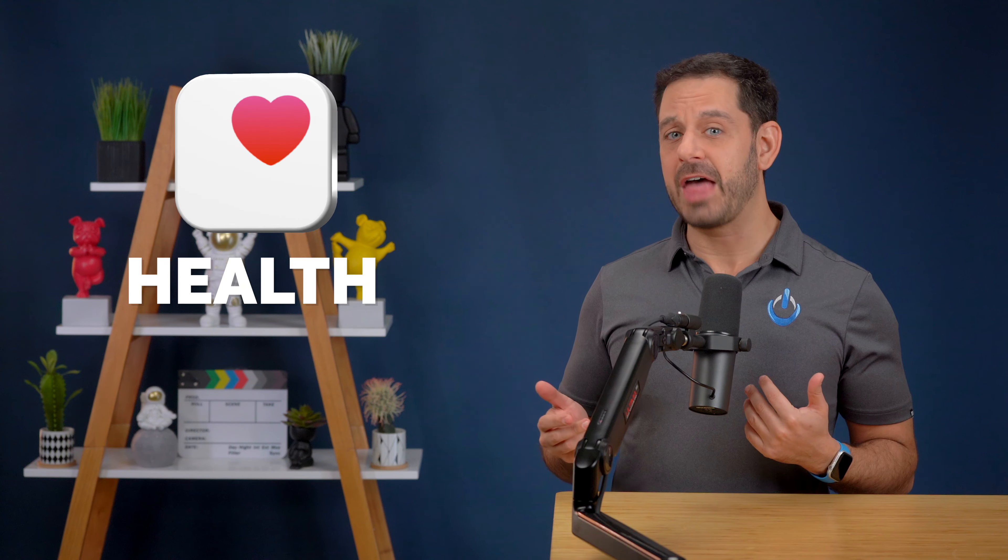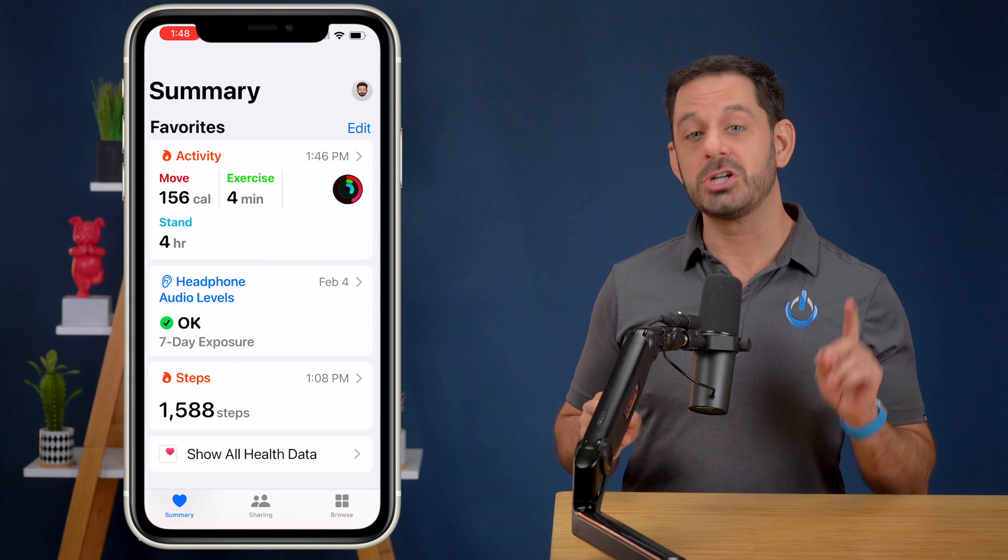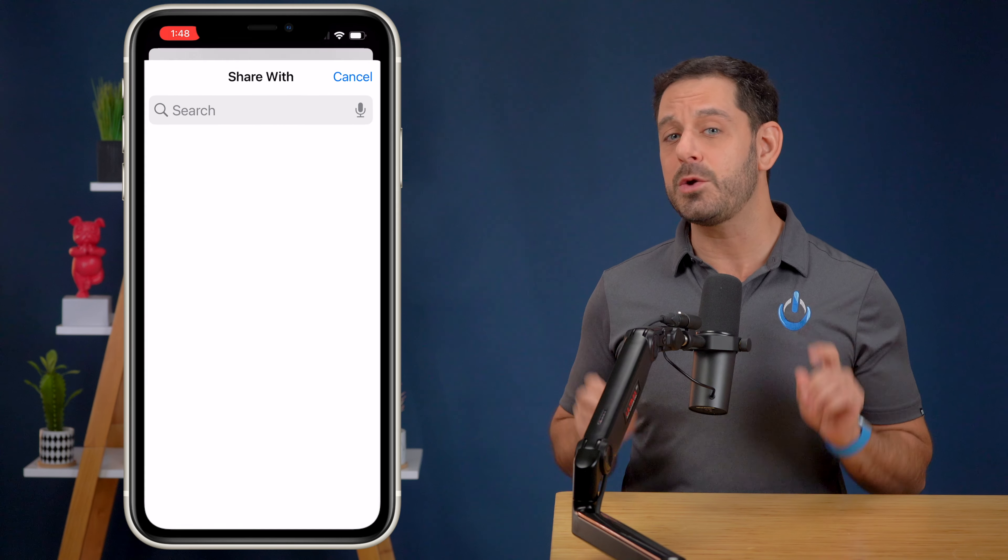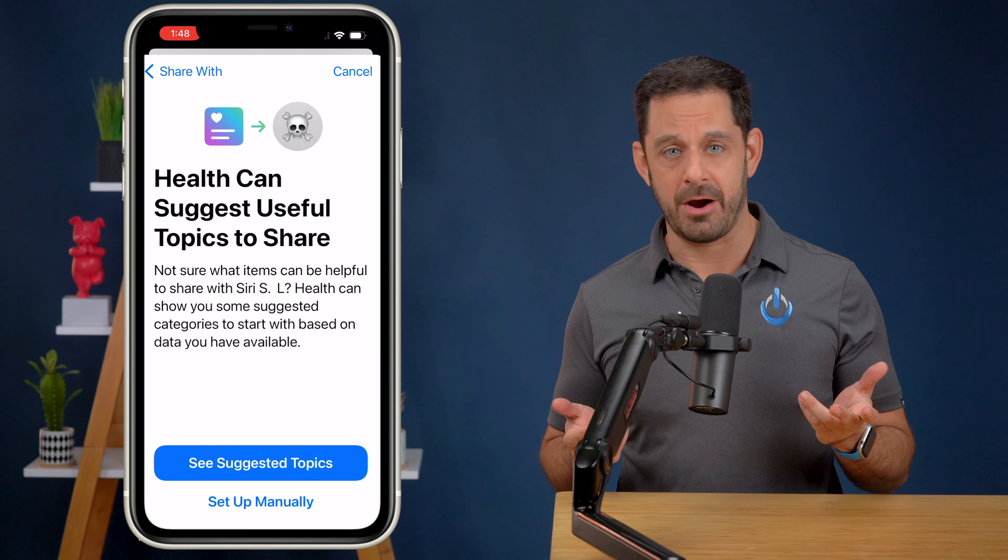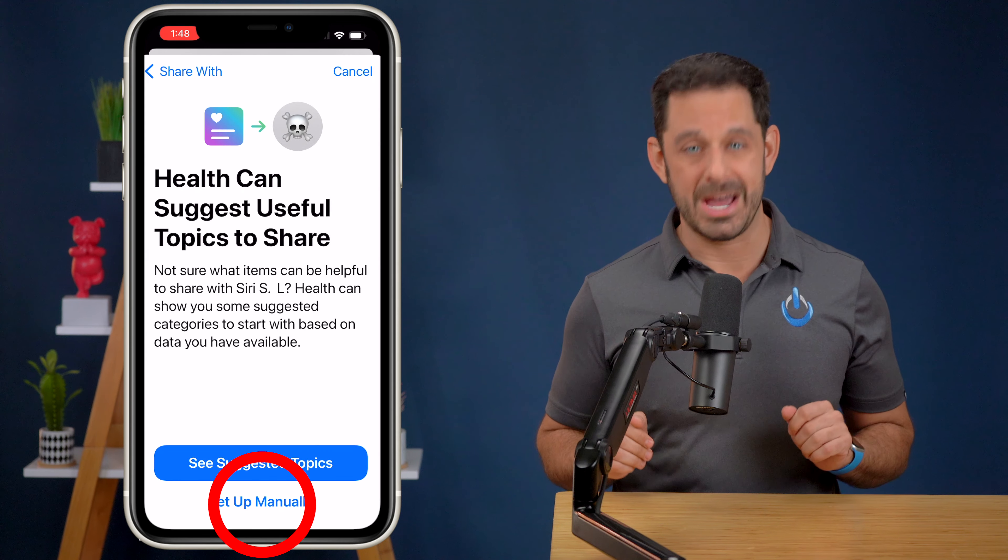At number four, we have some major updates in the health app, including the ability to share health alerts with loved ones or even your doctor. To access this feature, just go into the health app and tap on sharing at the bottom. You can then select a contact and choose exactly what type of health information to share. You can go with Apple's suggestions, but for this demo, let's go with manual.